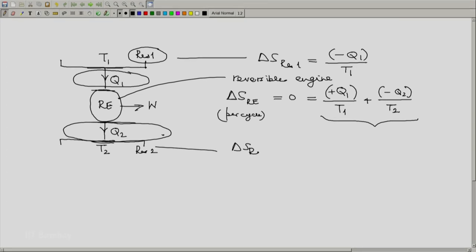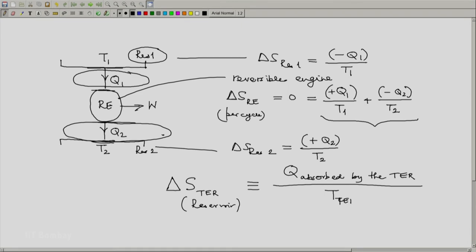So generalizing this, we should note this general case that delta S of a TER or thermal energy reservoir is defined as the heat absorbed by the TER divided by the temperature of the thermal energy reservoir.